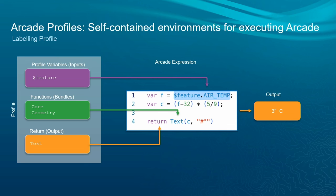Part of the profile definition is the output — what are valid return types? In the context of labels, you can really only return text, so anything coming out of Arcade gets cast as text. Some profiles support dictionaries, like pop-up elements. The profile determines what it expects as output. This example shows taking temperature and converting it from Fahrenheit to Celsius.